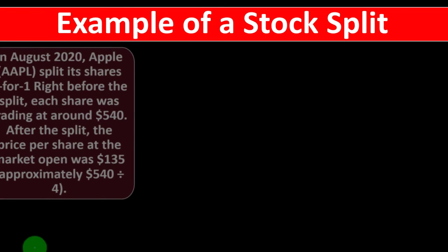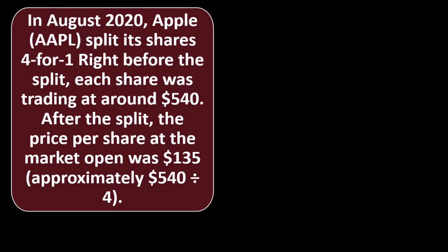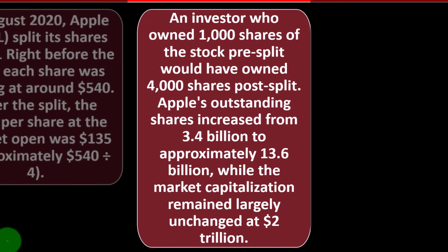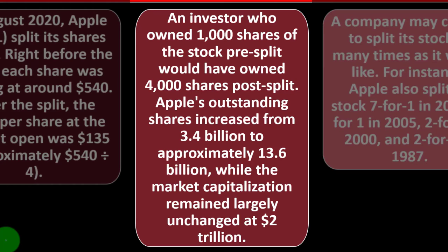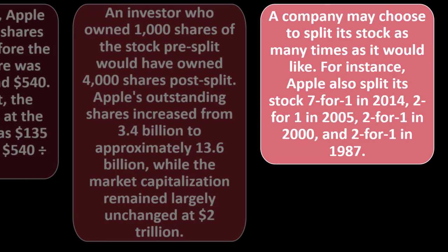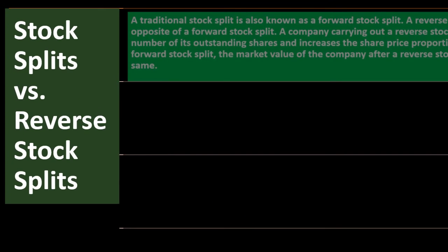An example of a stock split: in August 2020, Apple (AAPL) split its shares four-for-one. Before the split, each share was trading at around $540; after the split, the price per share at market open was approximately $135 ($540 divided by four). An investor who owned 1,000 shares pre-split would have owned 4,000 shares post-split. Apple's outstanding shares increased from 3.4 billion to approximately 13.6 billion, while market capitalization remained largely unchanged at two trillion dollars. Apple has also split its stock seven-for-one in 2014, two-for-one in 2005, two-for-one in 2000, and two-for-one in 1987.